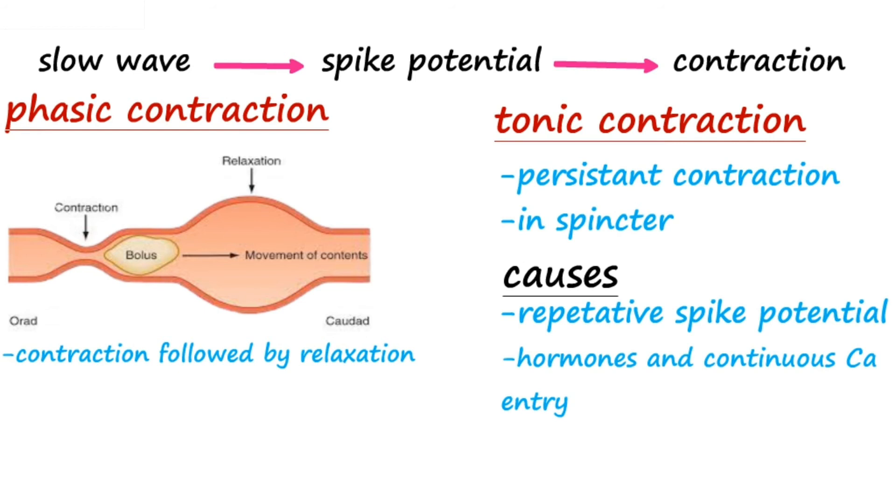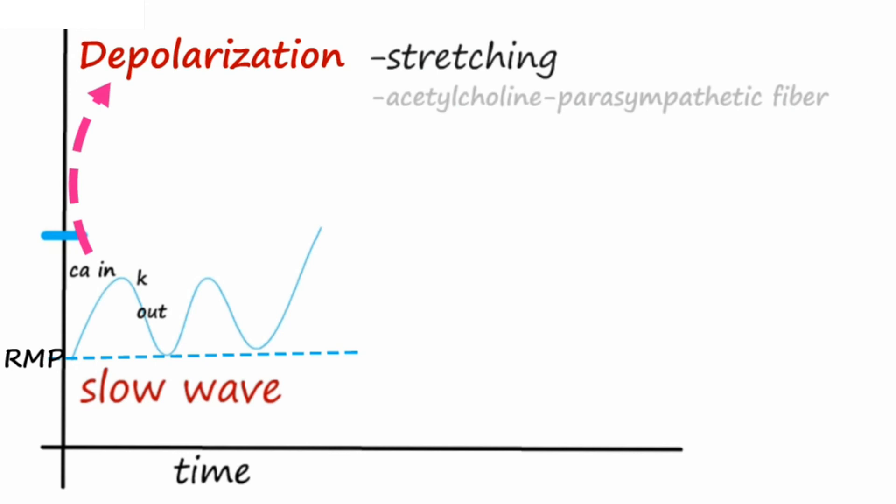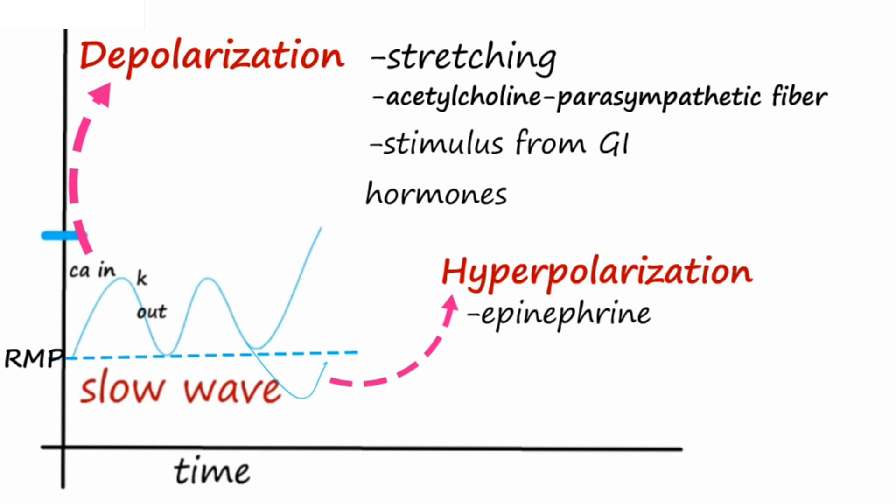Some factors that cause depolarization include stretching, acetylcholine from parasympathetic nervous system, and stimulus by different specific GI hormones. And some factors which cause hyperpolarization include epinephrine, norepinephrine, and stimulus from sympathetic fibers.